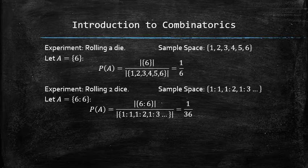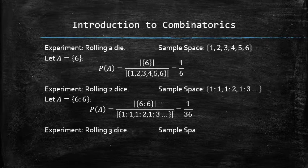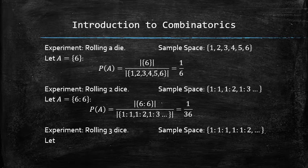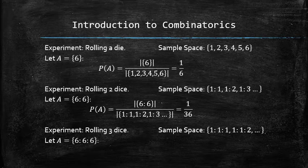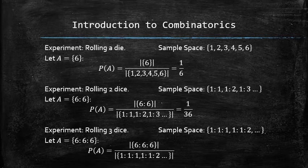Finally, consider the experiment of rolling 3 dice, with a sample space the size of which we don't know. Let A be an event in which the outcome is a sum of 36. To find the probability of A, we divide the number of outcomes in the event by the size of the sample space — a number that we don't know this time. But can we figure this out?